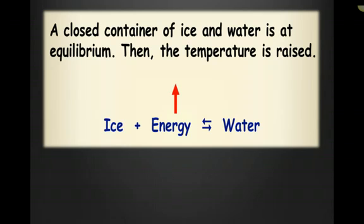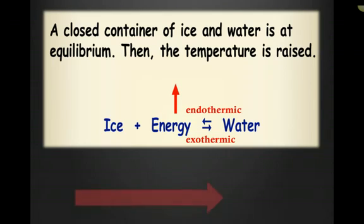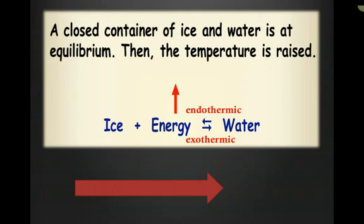A closed container of ice and water is at equilibrium and then the temperature is raised. As temperature increases, the endothermic reaction is favored. Since the forward direction is endothermic and the reverse direction is exothermic, an increase in temperature favors the forward reaction — the equilibrium shifts to the right. That makes sense, because if you add heat to ice, it's going to melt. The concentration of water is going to increase and the concentration of ice is going to decrease. Whichever direction the equilibrium favors, that side increases and the other side decreases.